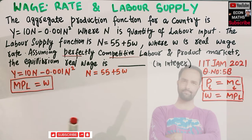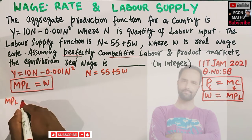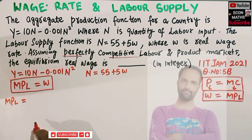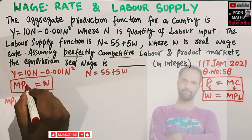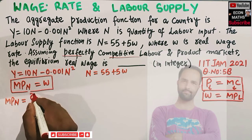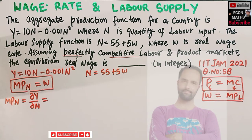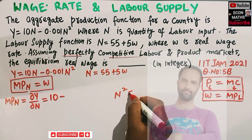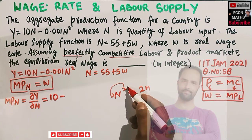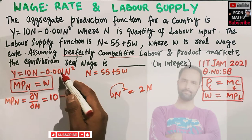We need to find the MPL here. MPL is simply the derivative of the production function with respect to labor, which we denote as n. So the marginal product of labor equals the derivative of the production function with respect to n. Taking the derivative: the derivative of 10n is 10, and applying the power rule to n², the exponent becomes the coefficient and the exponent is reduced by 1, giving us 2n.